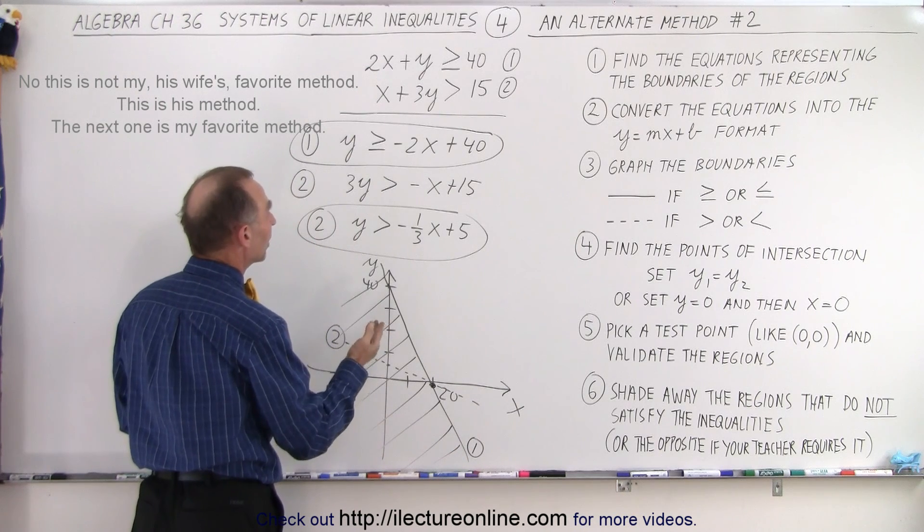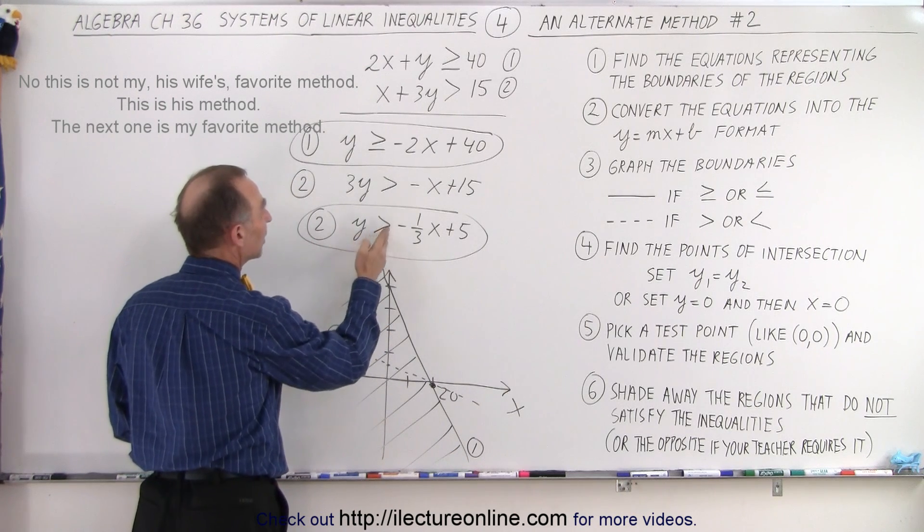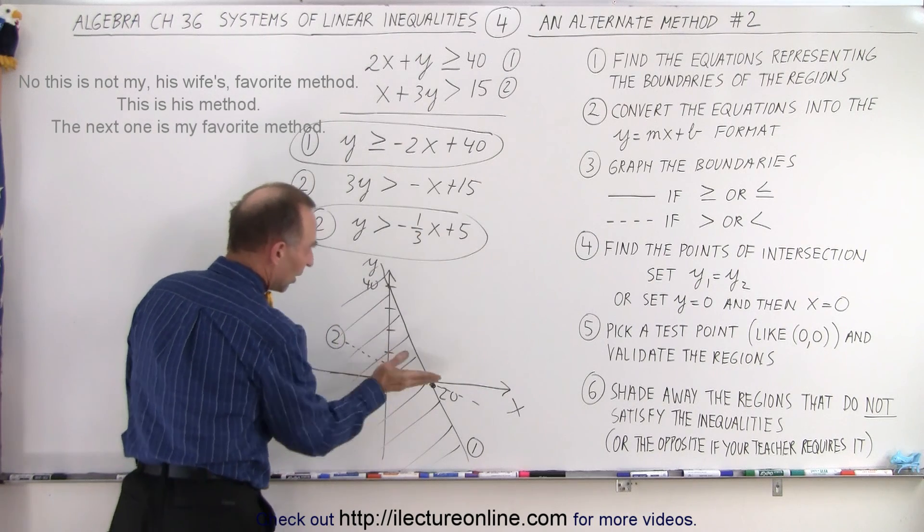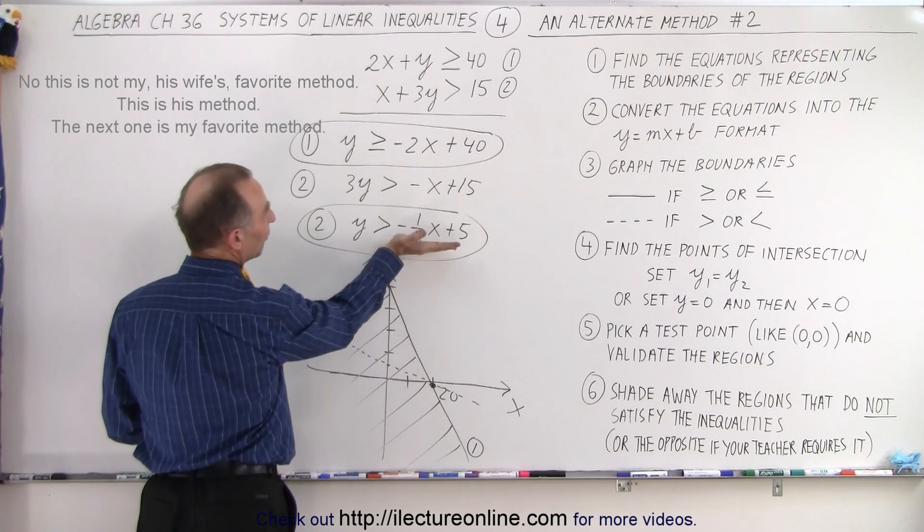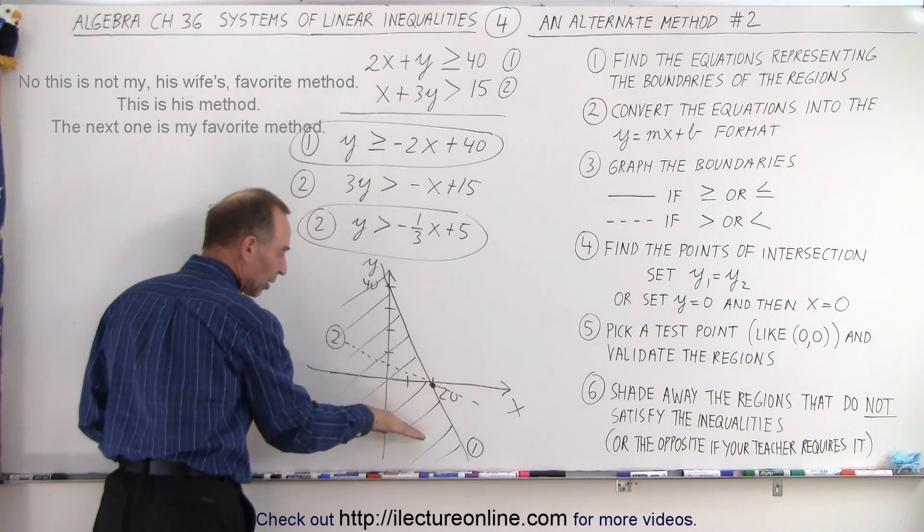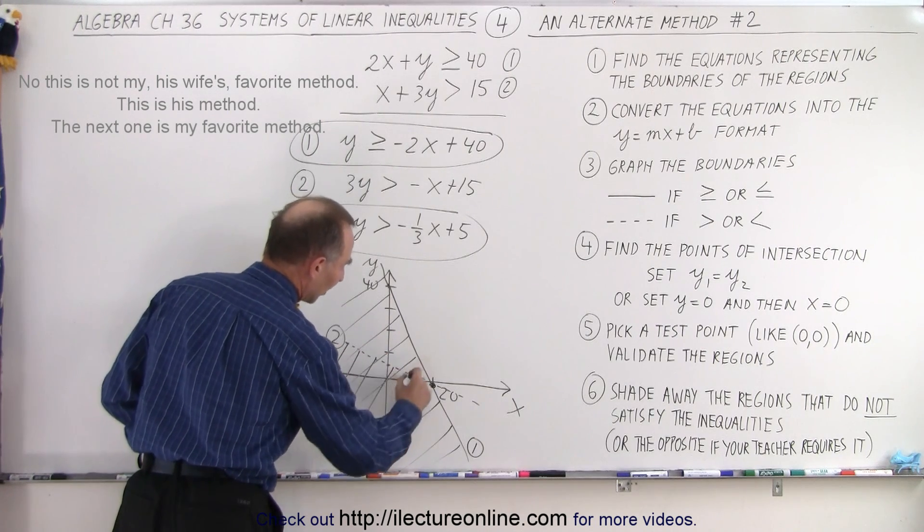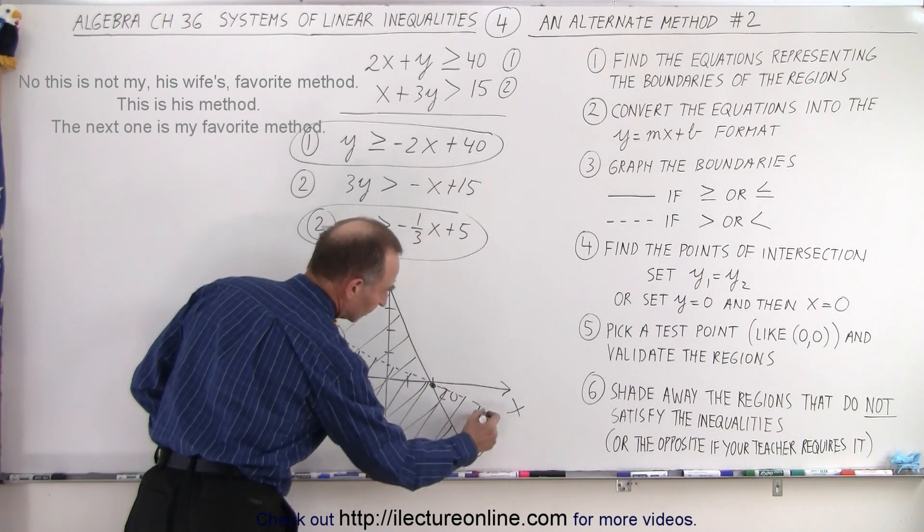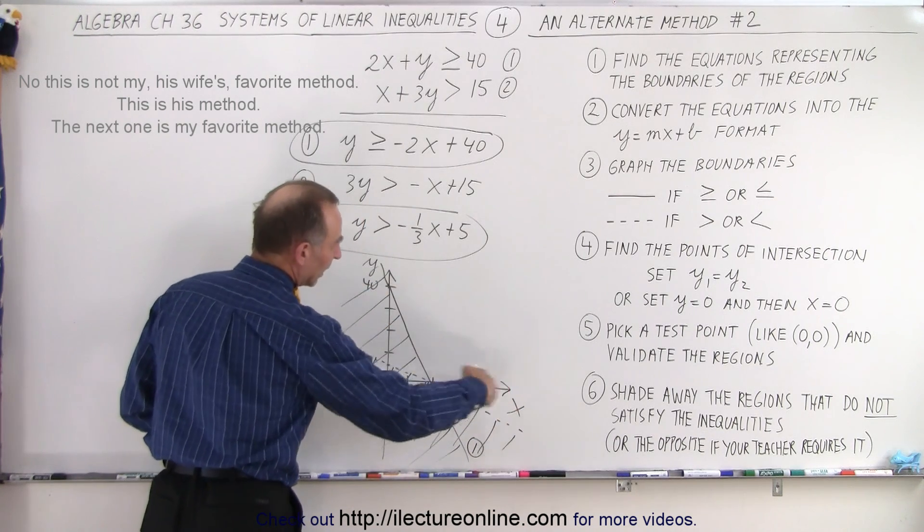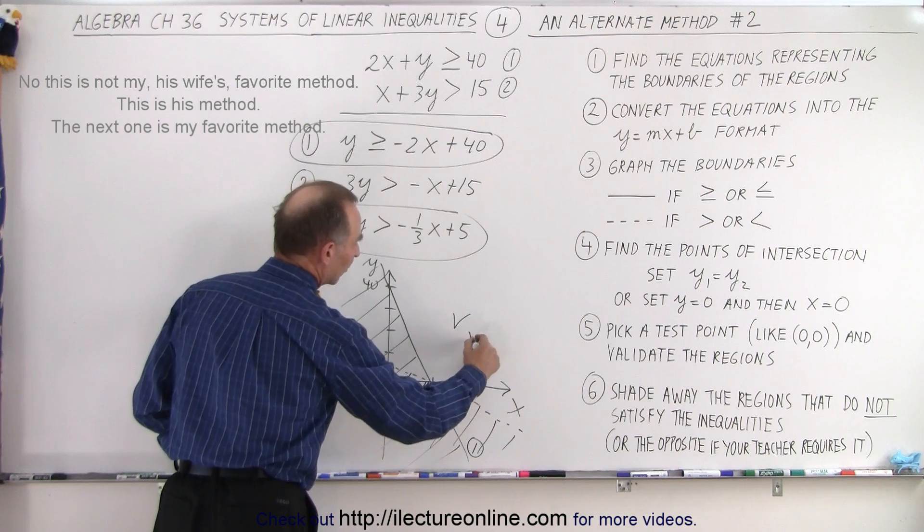And then we look at our second inequality. Again, we're looking for y being greater than -1/3x + 5. Above that line would be greater values for y. Below this line would be smaller values for y. So again, we get rid of the region that does not satisfy that inequality. Like this. And then the remaining region right here, that's a yes.